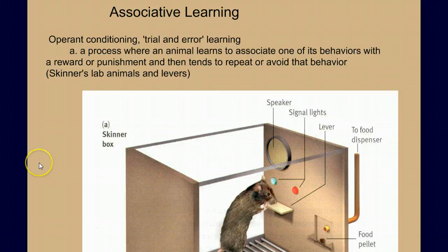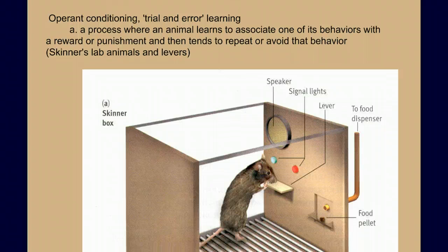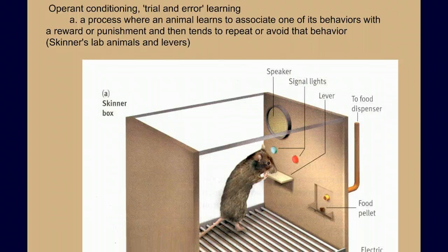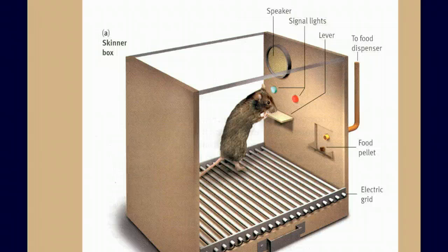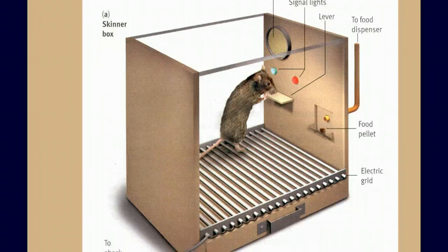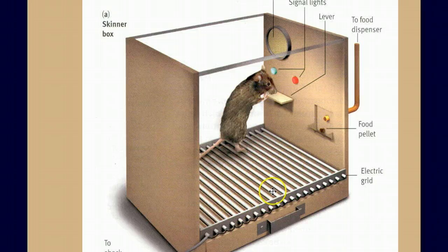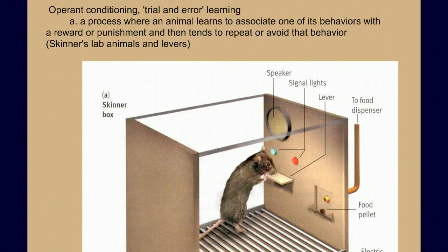The other type of associative learning is operant conditioning, or trial-and-error learning, where an animal engages in a behavior that is either rewarded or punished. If the behavior results in a positive consequence, that behavior will tend to increase; if negative, it will decrease. This is very obvious in the Skinner box, where a rat learns to press a lever more when rewarded with food, or less when shocked. Try to think of real-world animal examples of operant conditioning.